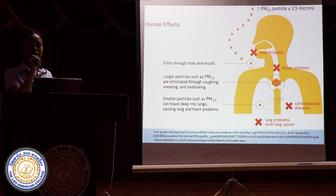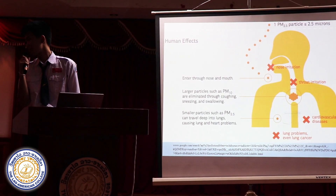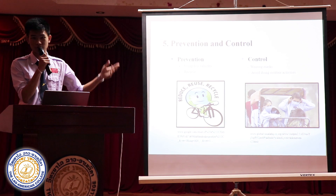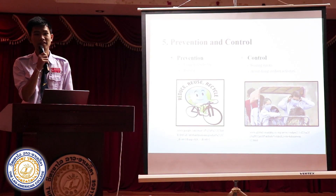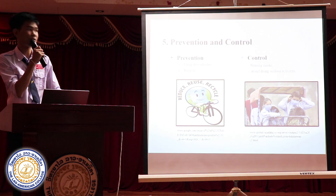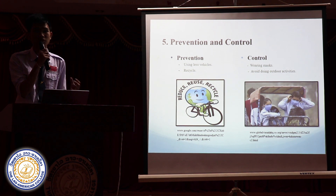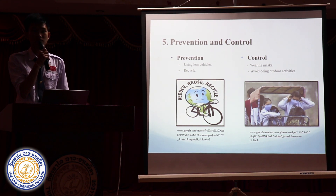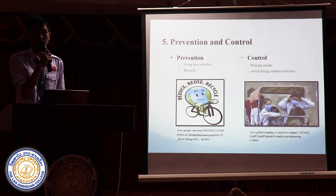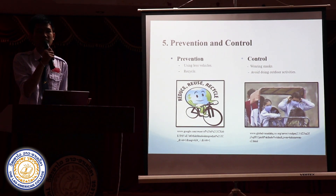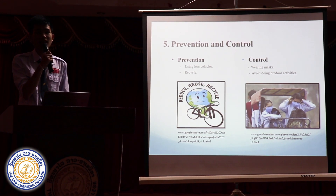My friend is going to tell you how we can prevent and control it. Now, let's look at two aspects of prevention and control. First, we'll look at prevention, and then we'll move on to control. For prevention: first is using fewer vehicles. You must try to use fewer vehicles and instead use more bicycles or buses to reduce releasing pollution into the air. Next is recycling — reusing things or garbage to reduce burning and releasing carbon dioxide into the air.